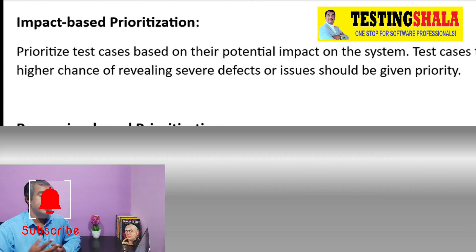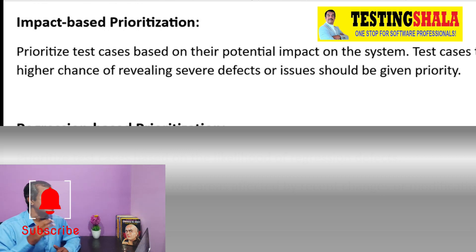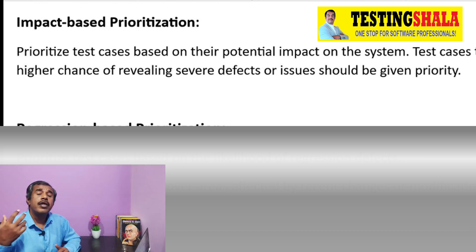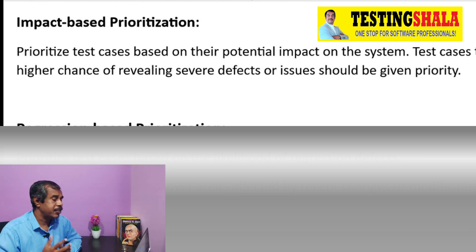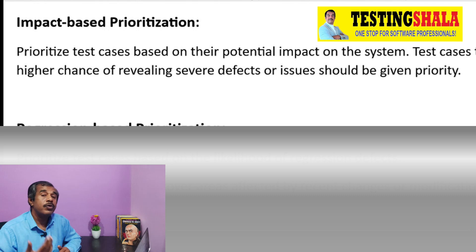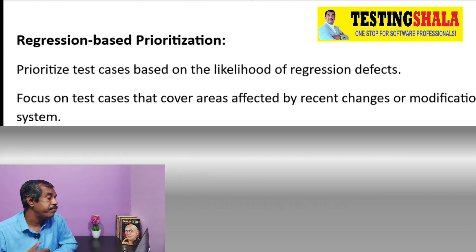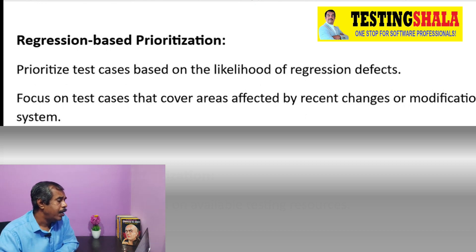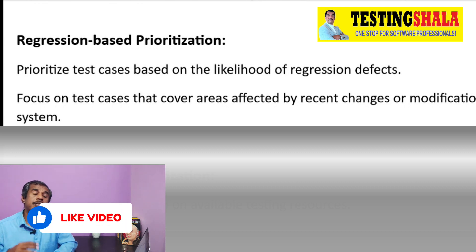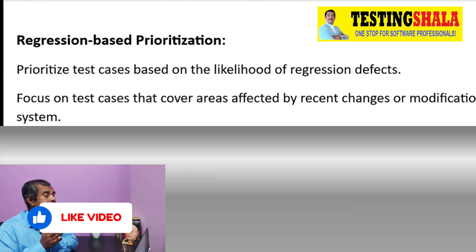The next one is impact-based prioritization, which is related to risk-based testing. Here, if you are not going to execute a given test case, we assess what the impact would be on the application. Understanding what problem could be caused by not testing a test case is very crucial, and that is what we evaluate in impact-based prioritization.